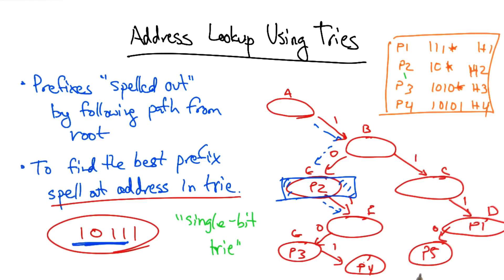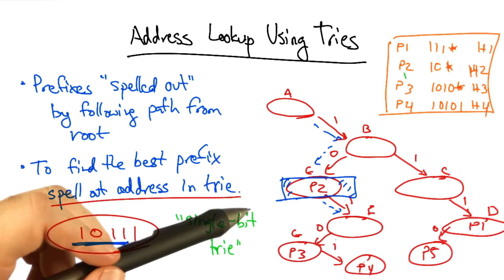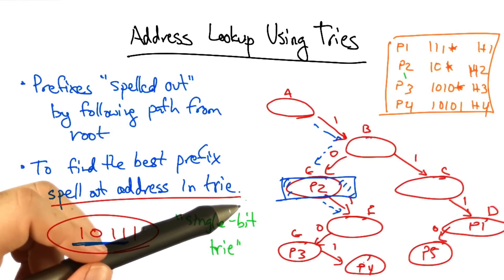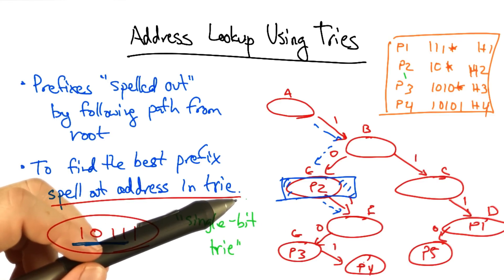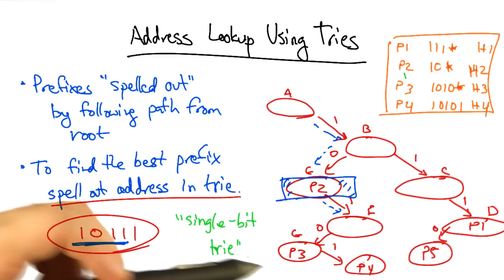the main problem is the number of memory accesses that are required to perform a lookup. For a 32-bit address, we can see that looking up the address in a single-bit trie might require 32 lookups in the worst case. One for each bit.